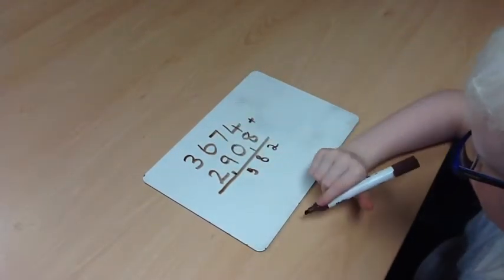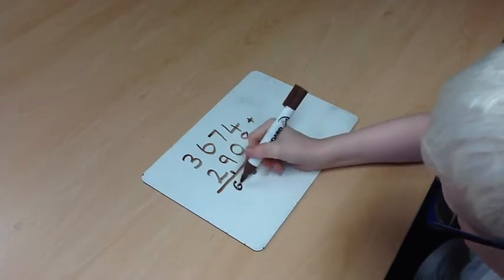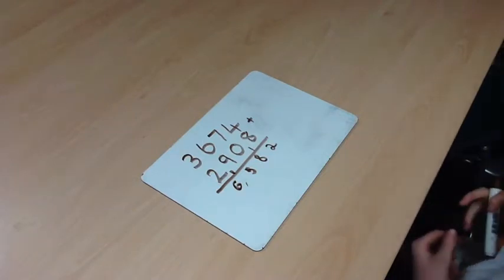3 add 2 is 5, add the 1 is 6. So the answer is 6582.